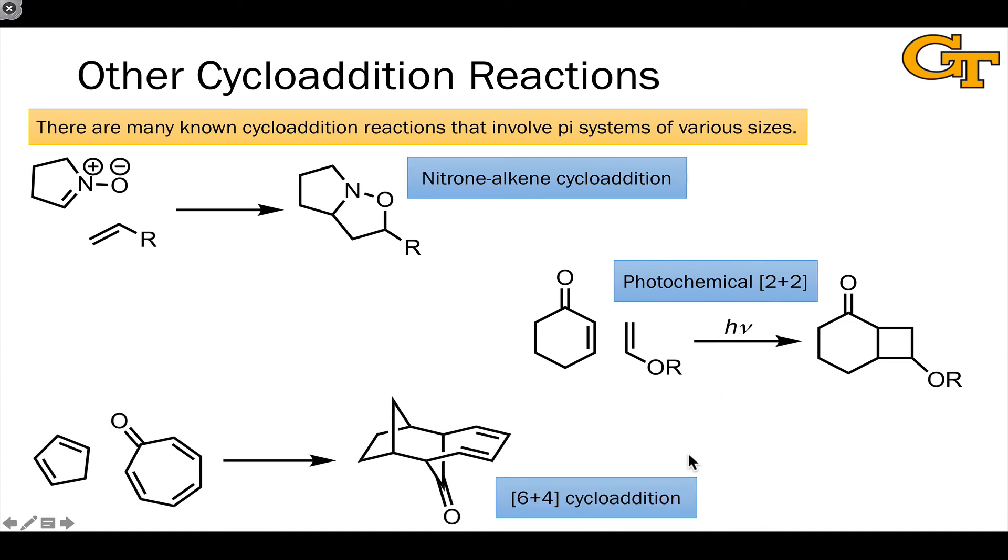And finally here we have a 6+4 cycloaddition where a four-atom pi system combines with a six-atom pi system to generate a product with a lot of structural complexity.